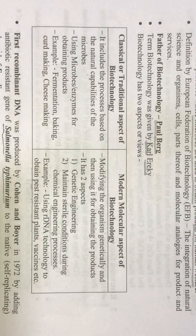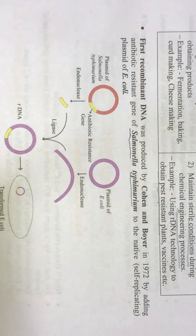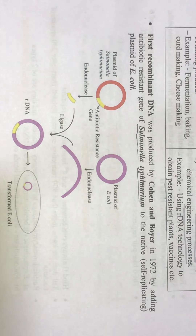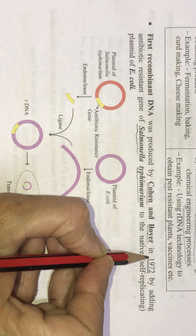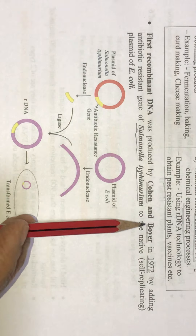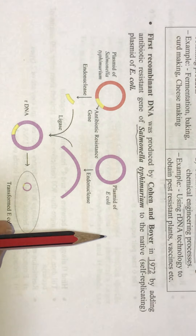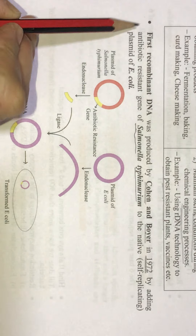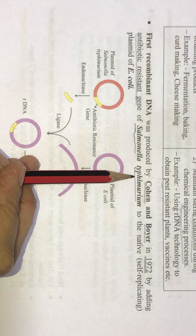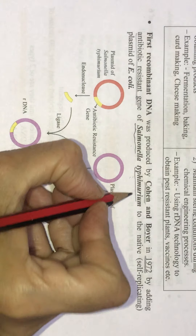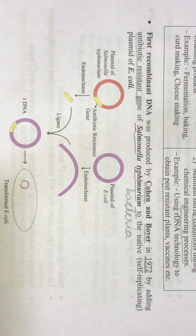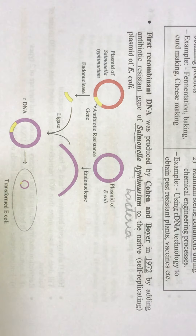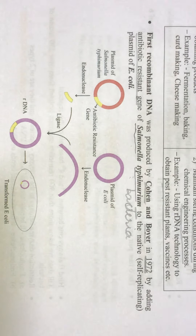The first recombinant DNA was produced by Cohen and Boyer in 1972 by adding an antibiotic resistant gene of Salmonella typhimurium — a bacteria that lives in the gut of organisms. This antibiotic resistant gene was transferred to the plasmid of E. coli. Some enzymes called endonucleases helped to break down the genetic material and isolate this gene.